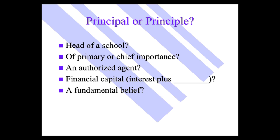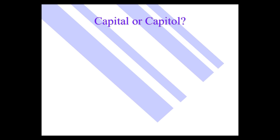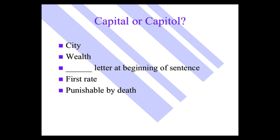Another very similar one is capital, capital T-A-L or capital T-O-L. The city, the capital of a state, that is T-A-L. Wealth, capital accumulation, that is T-A-L. How about a capital letter at the beginning of a sentence? That is T-A-L. How about first rate? That's a capital idea, T-A-L. How about punishable by death? Capital punishment, T-A-L. They're all T-A-L. The only definition of T-O-L, the only time you ever use capital T-O-L, is when you're talking about the building, the state capitol building, or the U.S. Capitol building in Washington, D.C.